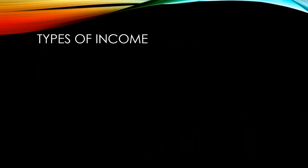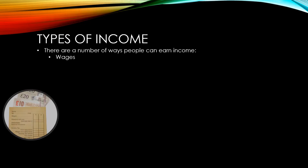Income can take a number of forms. The main form of income for households in the UK is wages or salaries. This is the money that's paid to workers for providing their labour to firms in order to produce goods and services. For many households, wages or salaries will be their only type of income.